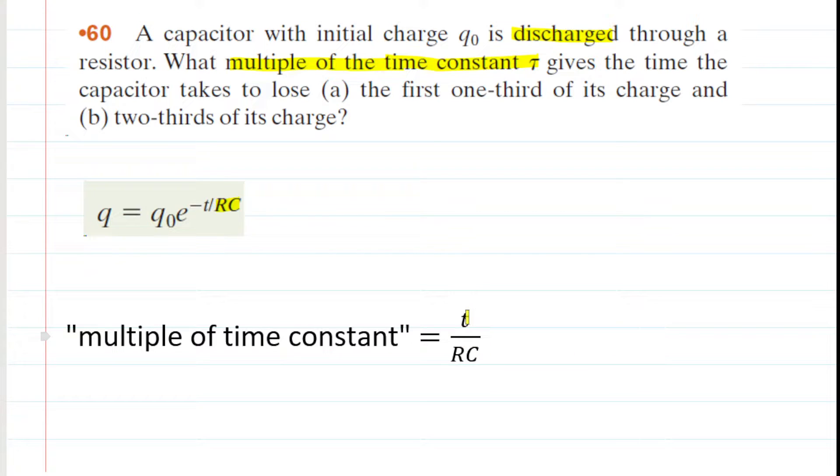So multiple of time constant would be taking the time and dividing that by the overall time constant, which is that RC value. We're trying to solve for t over RC, which is right here in the equation.